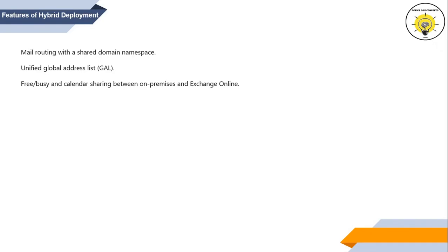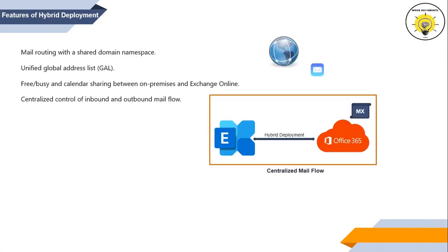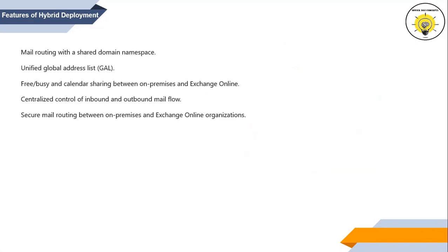Exchange Hybrid Deployment enables free/busy and calendar sharing between on-premise and Exchange Online, so on-premise and cloud-hosted users can see each other's availability and share calendars. Another benefit is centralized mail flow — by enabling it, we can control inbound and outbound emails. All external emails are routed to the MX record and through the outbound connector, then delivered to on-premise or Exchange Online based on recipient location.